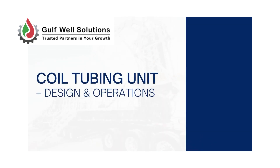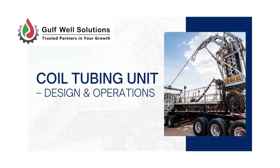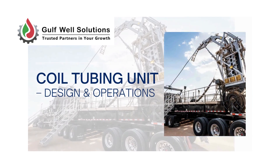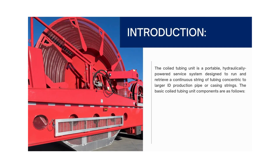Welcome to the module on Coiled Tubing Unit Design and Operations. The Coiled Tubing Unit is a portable, hydraulically powered service system designed to run and retrieve a continuous string of tubing concentric to larger ID production pipe or casing strings.